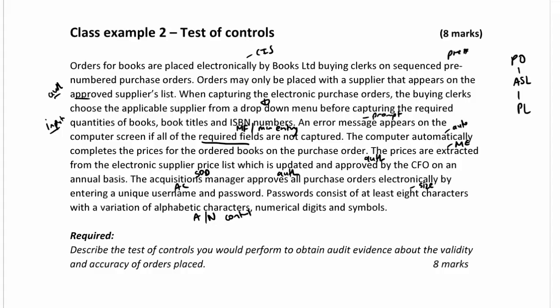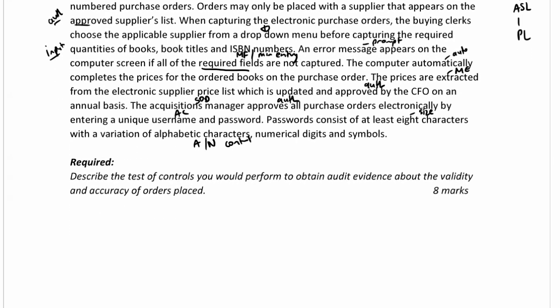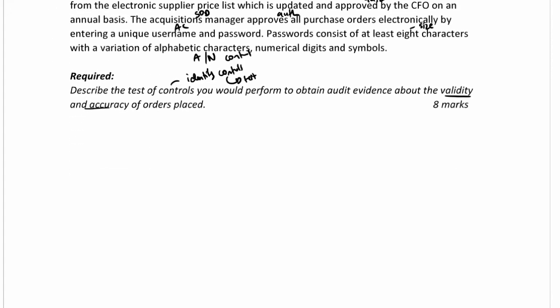The question asks: describe the tests of controls you will perform to obtain audit evidence about the validity and accuracy of orders placed. This means we need to identify and test the controls, but only those relating to validity and accuracy — that is, controls over occurrence, authorization, and accuracy. There are no controls over completeness required here, for eight marks.